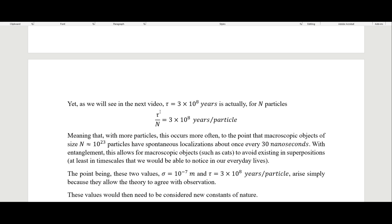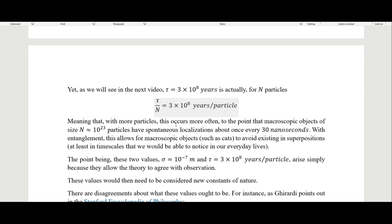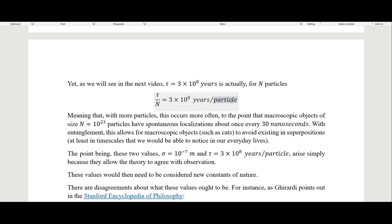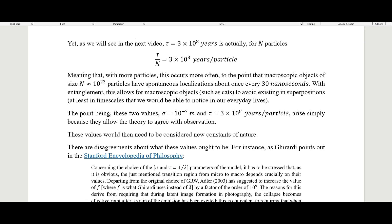Yet, as we'll see in the next video, this 3×10^8 years, this 300 million years, is actually for n particles, tau over n. And so this should actually be years per particle. It means that with more particles, this occurs more often, to the point that macroscopic objects of size 10^23 particles have spontaneous localizations about once every 30 nanoseconds.